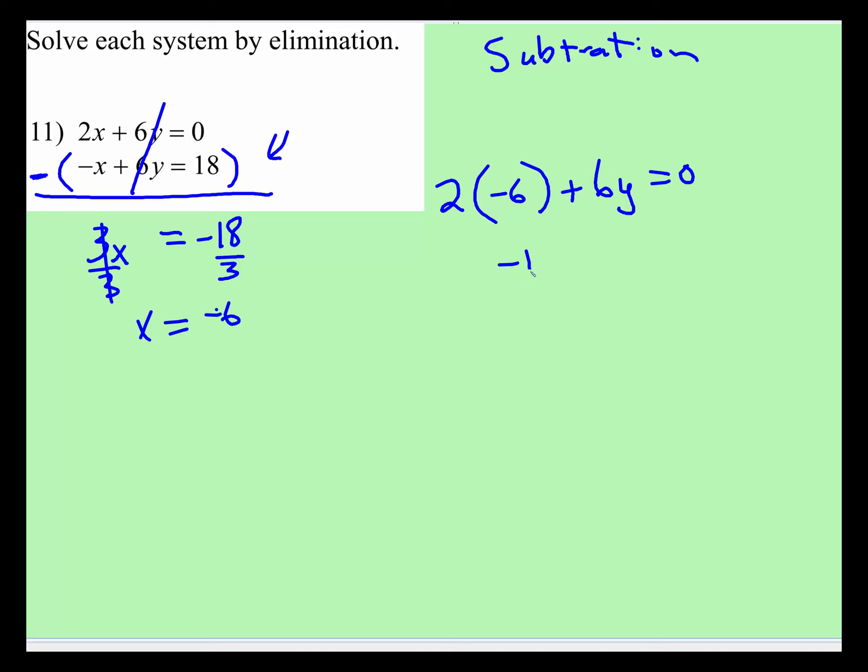2 times negative 6, negative 12 plus 6y is equal to 0. We're going to add 12 to both sides, and now you have 6y is equal to 12. When you divide both sides by 6, y is equal to 2.